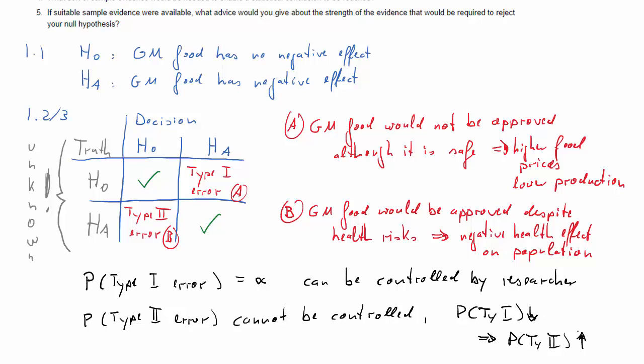In this case, you may think that you really want to control situation B because of the negative health effects. That's more immediate, but don't forget that in situation A, the impact could be famines and hunger, so it's not quite obvious.